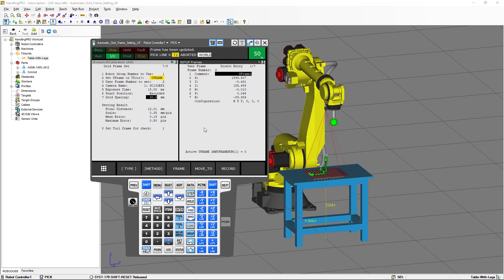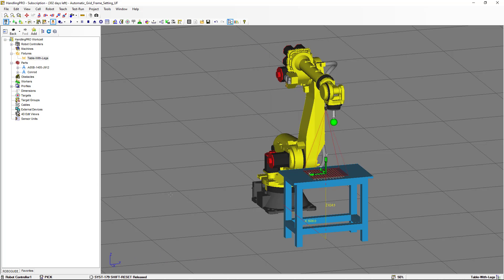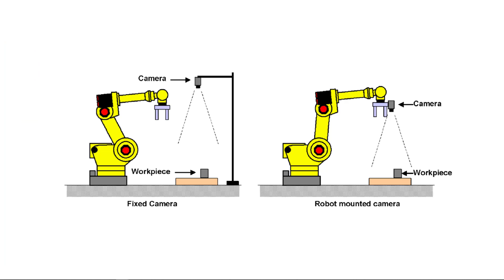One important thing I want to show you is that if you have a fixed mounted camera, in this case you are not able to move the camera automatically with the robot. But still you can apply this automatic grid frame setting using another camera mounted on the end-of-arm tooling. So this process can be done either if you have a robot mounted camera or a fixed mounted camera.